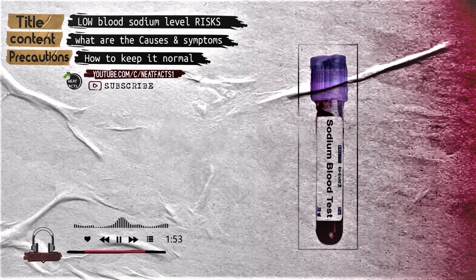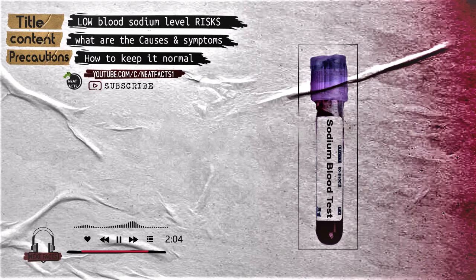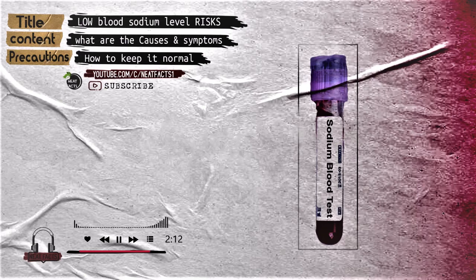Hypothyroidism, or underactive thyroid. Primary polydipsia, a condition in which excess thirst makes you drink too much. Using ecstasy. Syndrome of Inappropriate Antidiuretic Hormone, SIADH, which makes your body retain water. Diabetes insipidus, a rare condition in which the body doesn't make antidiuretic hormone. Cushing's Syndrome, which causes high cortisol levels — this is rare.